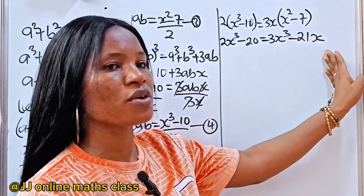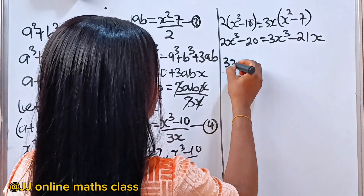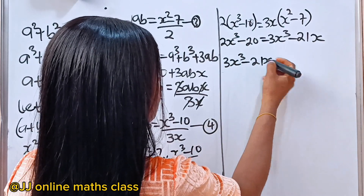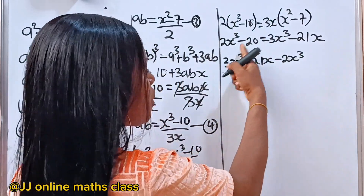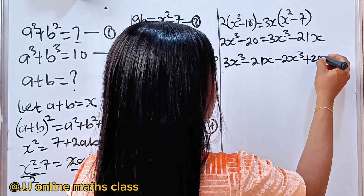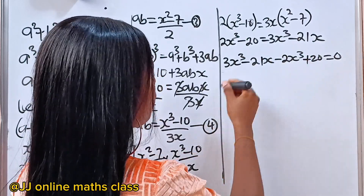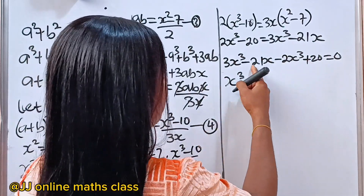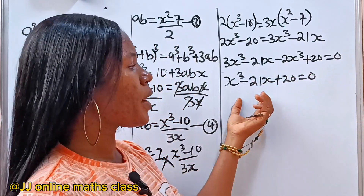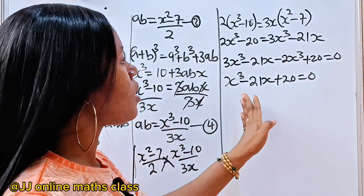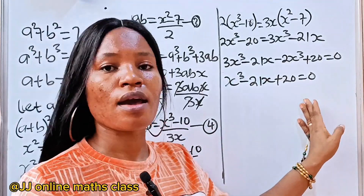Let's transfer everything to the right-hand side and set it equal to zero. So we have 3x cubed minus 21x, then minus 2x cubed plus 20 equals zero. Combining: x cubed minus 21x plus 20 equals zero. We have a cubic polynomial here, so we need to factorize it into a linear and a quadratic equation.